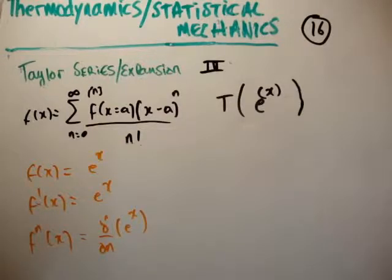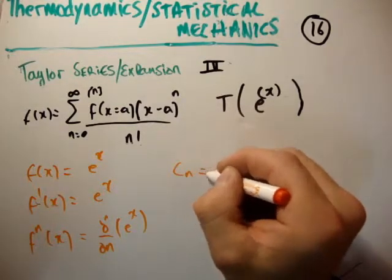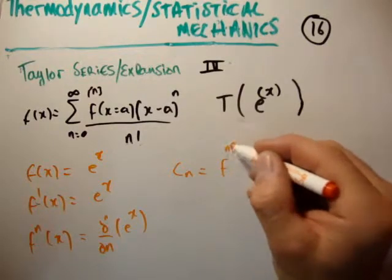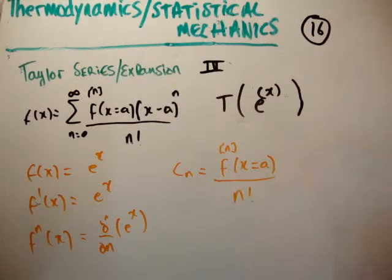So now we have all our coefficients, because we know that c sub n is equal to the n-th derivative evaluated at x is equal to a and divided by n factorial.